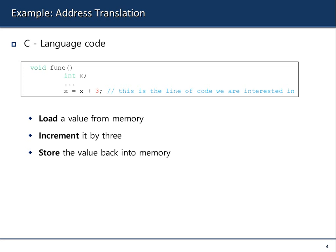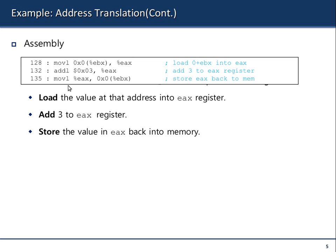Here is a C code example. This should have an initialization value — say, int x equals zero — because if you don't initialize it, the value will be some garbage. This function can be described in three steps: load a data from the memory, increment its value by three, and store the value back into the memory. At the assembly language level, int x equals some value, then incrementing by three, then moving into this.